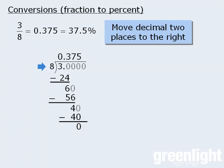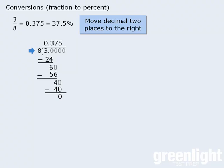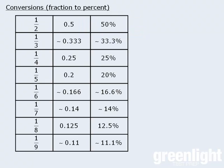On the GRE, we could use the calculator to make conversions from fractions to percents, but another option is to memorize a conversion table. This table is identical to the fraction-decimal conversion table examined in a previous lesson, except we have now added a new column for percents. If you can memorize these base conversions, you will be able to make similar conversions with ease.